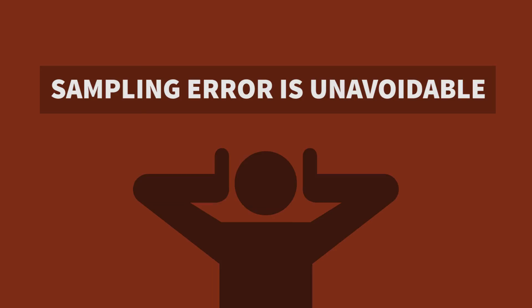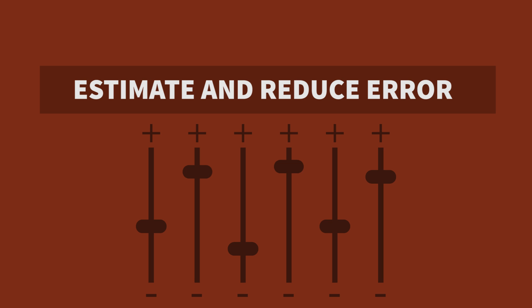When collecting a sample, we can't avoid sampling error, but we can estimate the size of sampling error, and there are ways of reducing sampling error. The margin of error that you commonly see with survey results is an estimate of sampling error. Because it is just an estimate, there is a small chance — usually 5% or less — that the margin of error is actually larger than stated in a report.